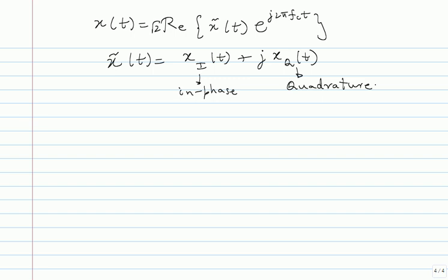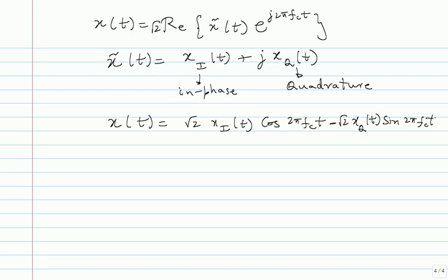Substituting back and multiplying by e^{j2πfct} and taking the real part, x(t) works out to: x(t) = √2 · X_I(t) · cos(2πfct) − √2 · X_Q(t) · sin(2πfct). Here X_I(t) and X_Q(t) are real and baseband signals, and x(t) is also real.